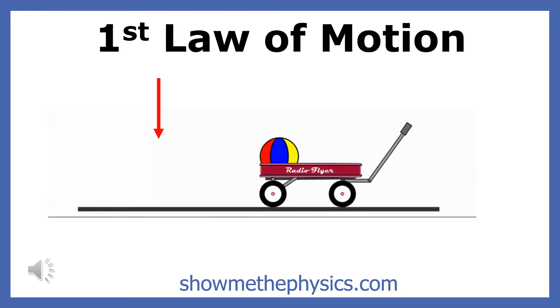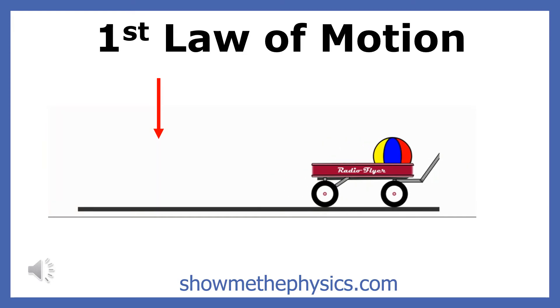When the wagon stops, the ball moves forward with the same speed it had when the wagon was moving. The ball's motion can be understood when you understand Newton's first law of motion.